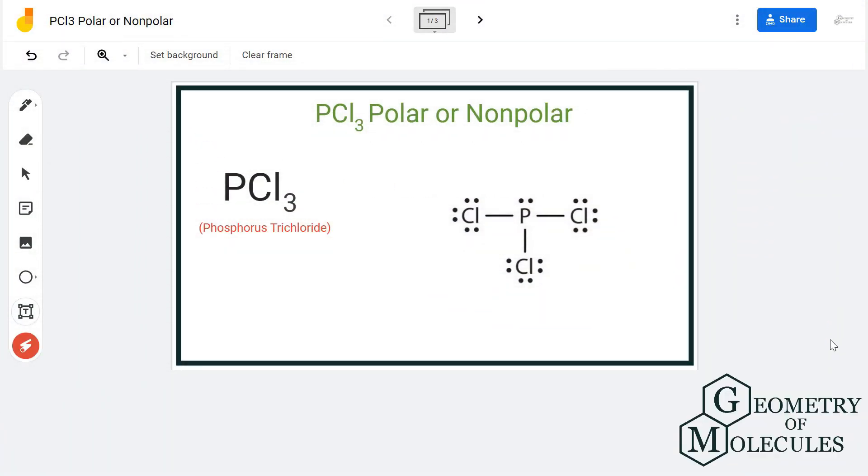Hi guys, today in this video we are going to determine the polarity for PCl₃ molecule. It's a chemical formula for phosphorus trichloride, and to determine its polarity we will first look at its Lewis structure.